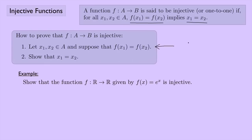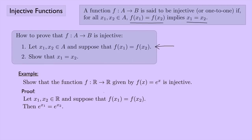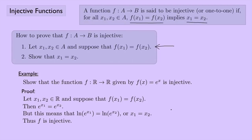Let's look at an example. Show that the function f from real numbers to real numbers given by f(x) equals e^x is injective. Here's the proof. Step one: let x1 and x2 be elements of ℝ and suppose that f(x1) equals f(x2). Step two: if f(x1) equals f(x2), that means e^(x1) equals e^(x2). Applying the natural log to both sides gives x1 equals x2. That's what we were trying to show, so f is injective. Notice when you write a proof, always use complete sentences.